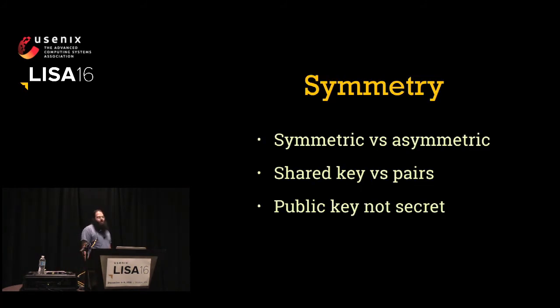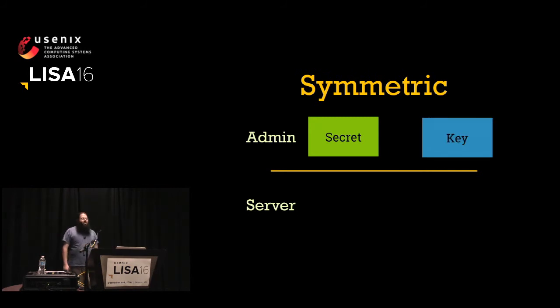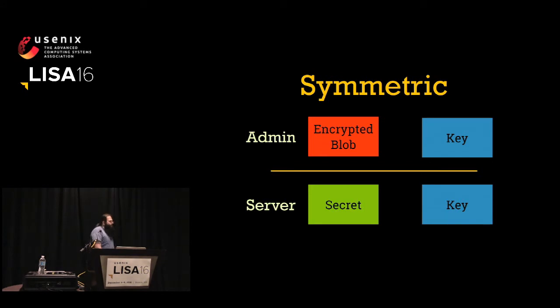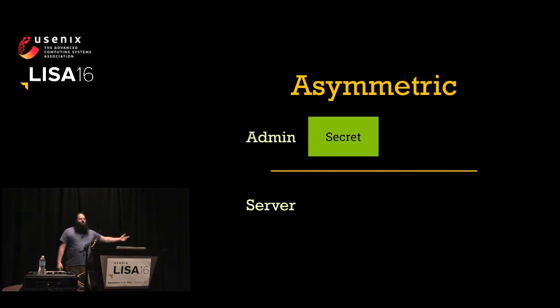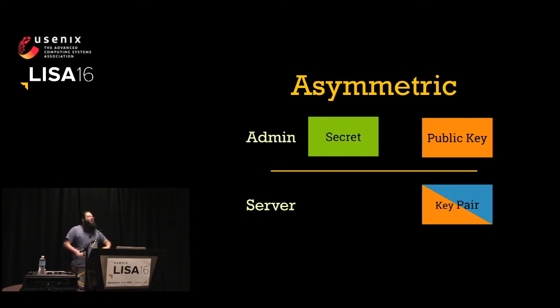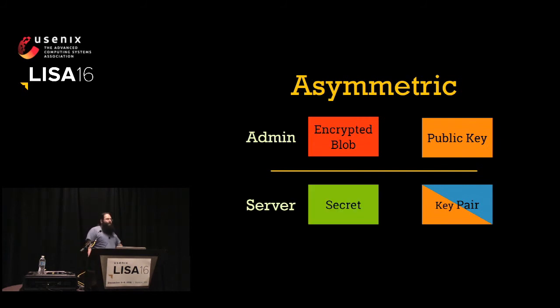Let's talk a little bit about cryptography. With a symmetric key system, we generate a random key, use the key to create an encrypted version of our secret, copy the key and the blob to our target server, and use the key to decrypt back to our original secret. With an asymmetric system, we generate a public-private key pair on the server, retrieve the public key, use it to generate an encrypted blob, copy it back, and use the private key to get back the secret.